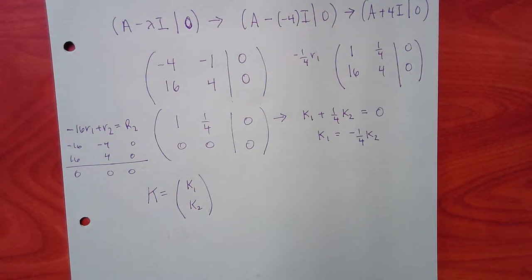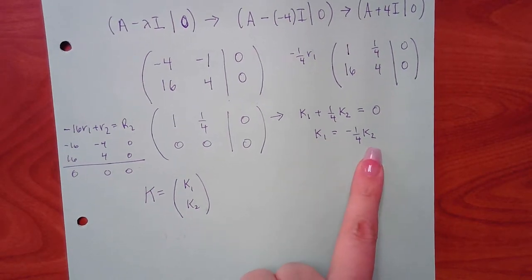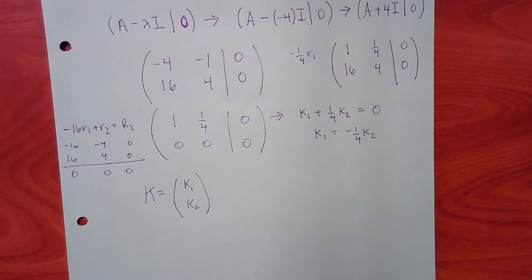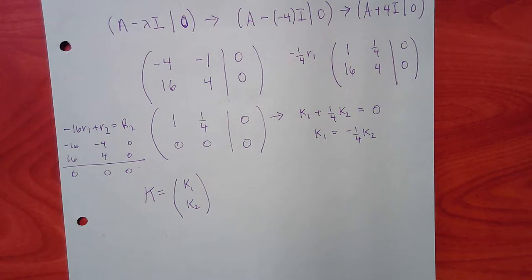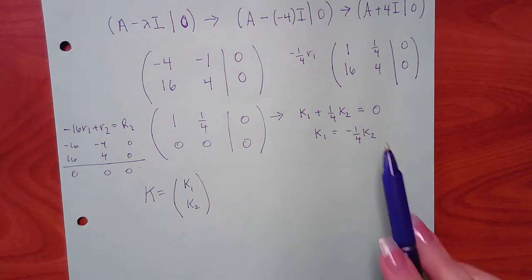The book's strategy: first try letting the isolated variable equal zero — but if that makes both components zero, try next to eliminate fractions by using the denominator. If no fractions, let the free variable equal one. The goal of this strategy is to match the answer in the back of the book.